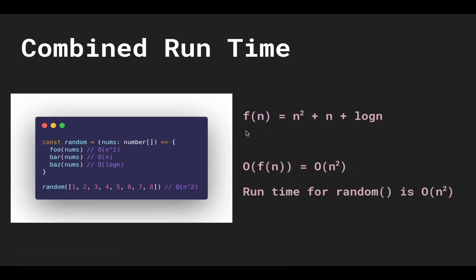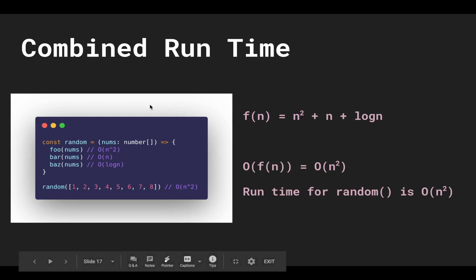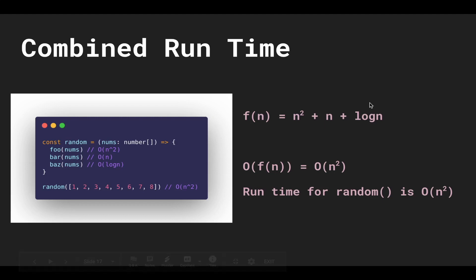Here's an example of combined runtimes. Imagine a function 'random' that takes a number array and passes it to three functions: foo runs in quadratic time O(n²), bar runs linearly O(n), and baz runs logarithmically O(log n). The total runtime is n² + n + log n, but because we only consider the most dominating term, we drop n and log n, giving Big O of n².